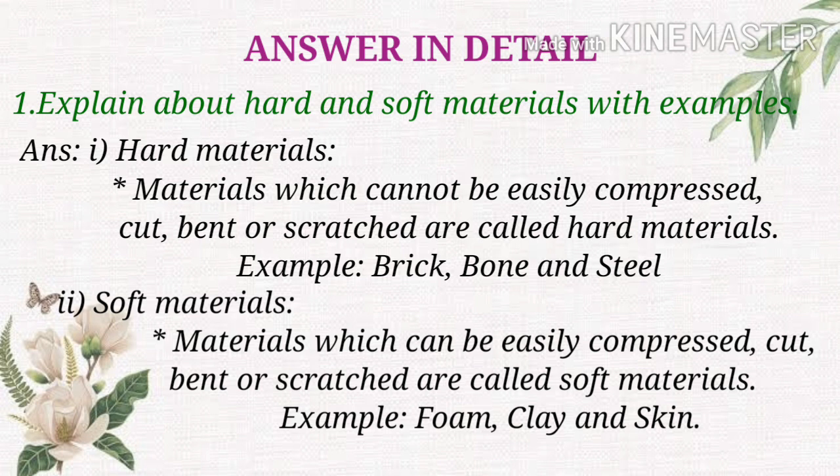Answer in detail: explain about hard and soft materials with example. Answer. Hard materials: materials which cannot be easily compressed, cut, bent or scratched are called hard materials. Examples: brick, bone and steel.